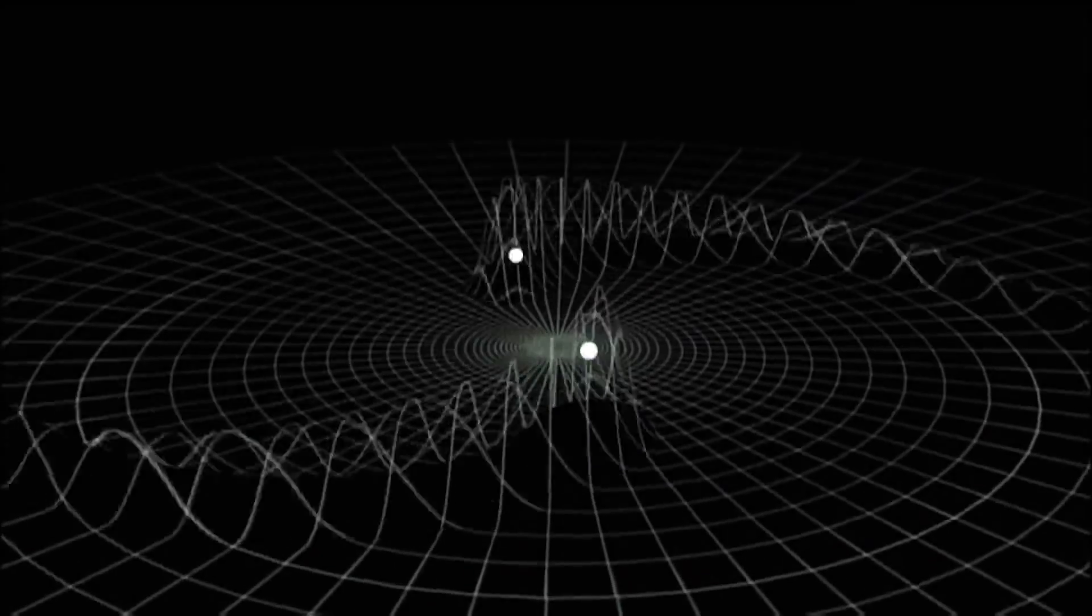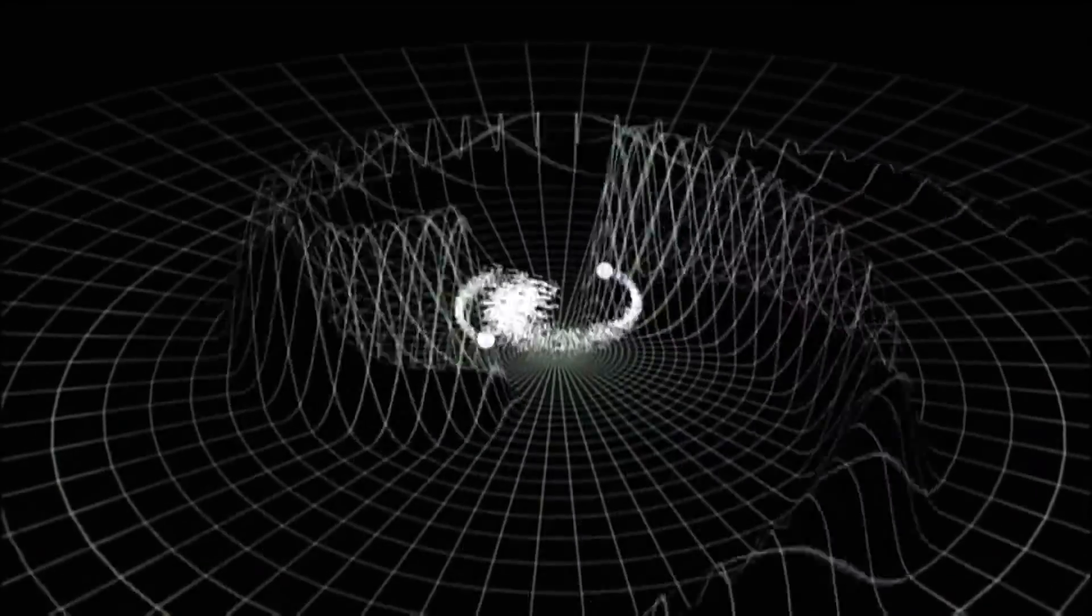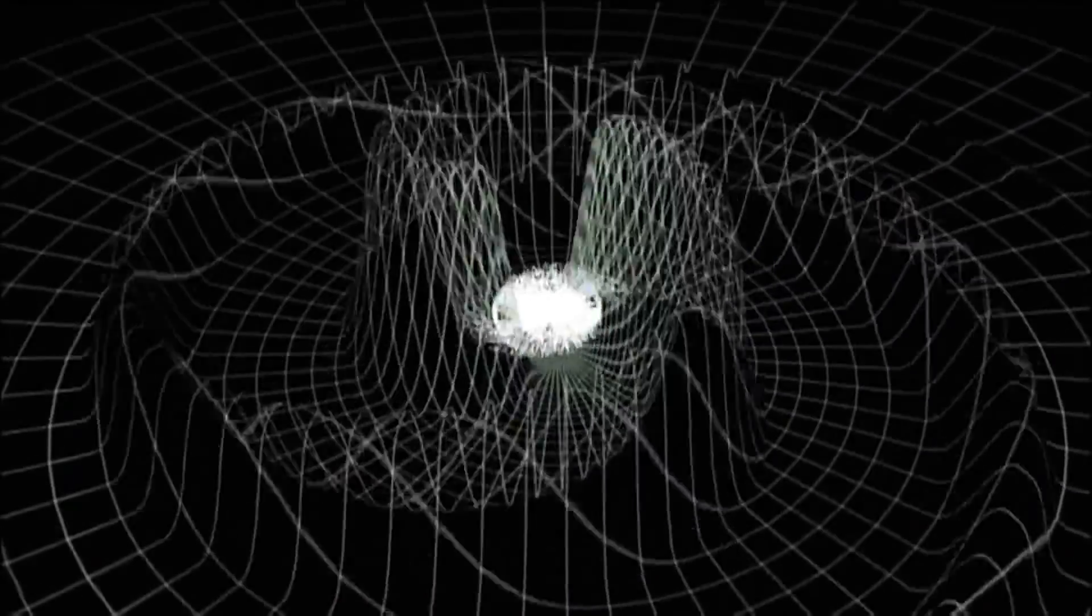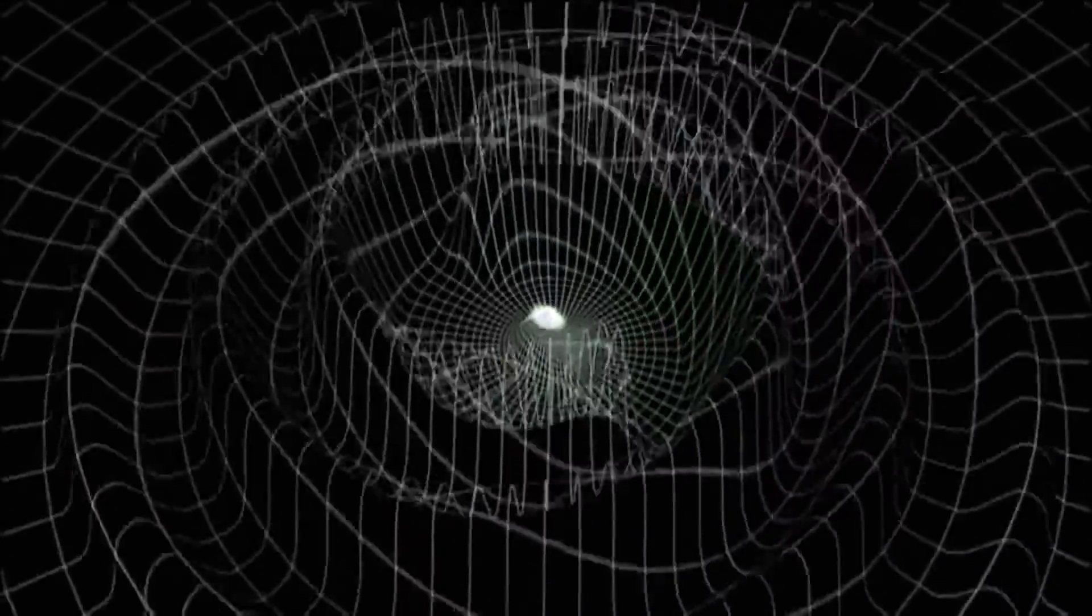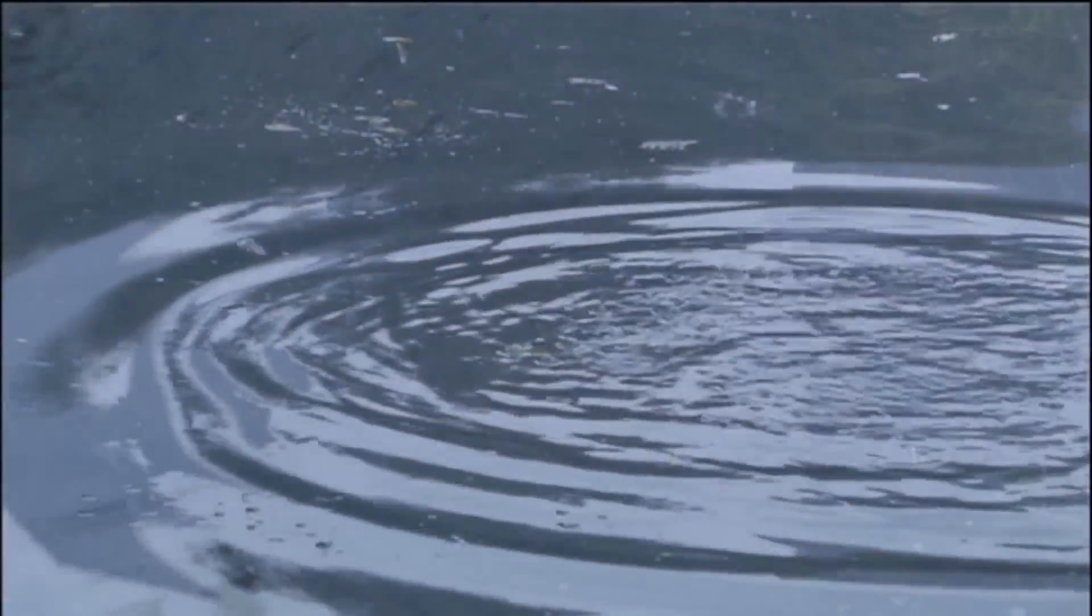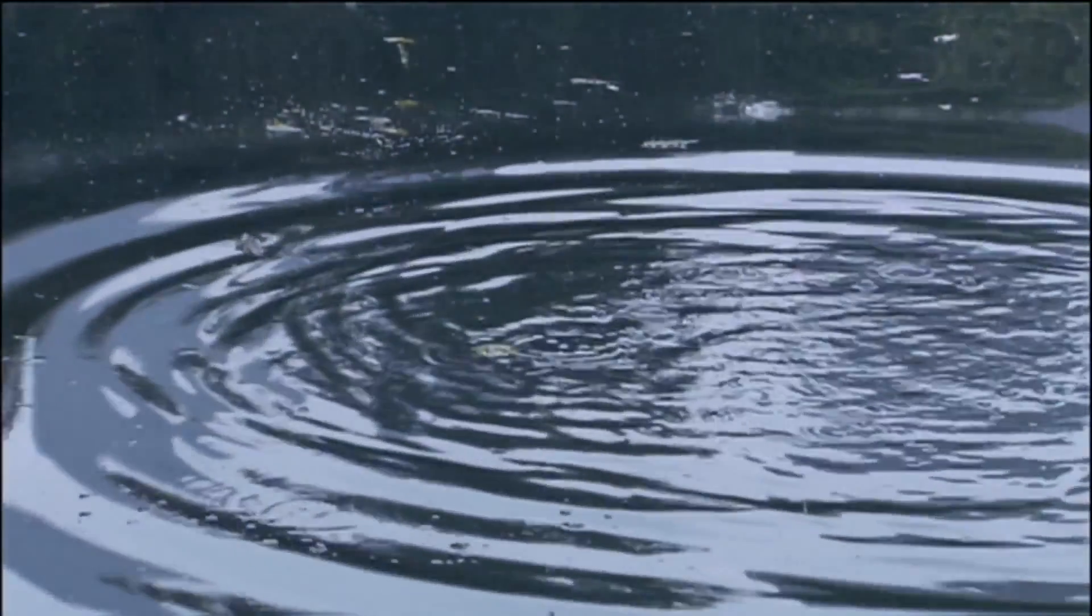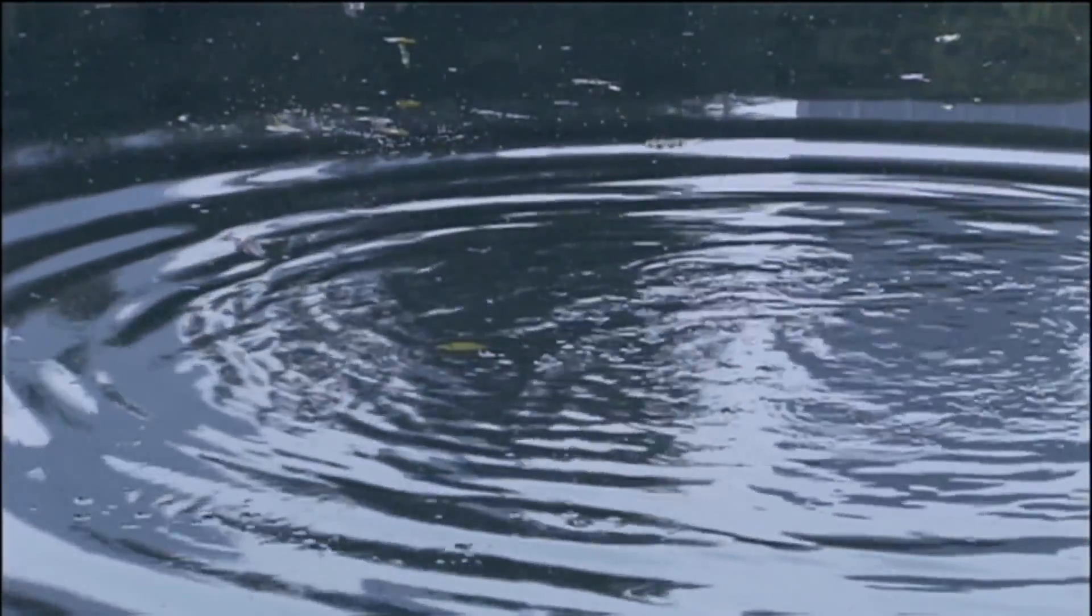Albert Einstein showed how they do it. He predicted that when massive bodies accelerate or whip around each other, they can stir up the normally smooth fabric of space-time. It's like a rock hitting a pond. Some of the energy of the impact is transferred to waves that move outward along the surface.